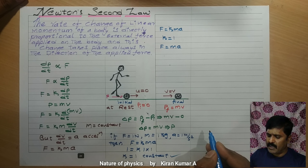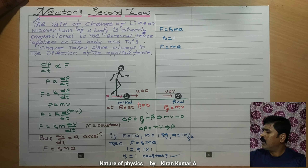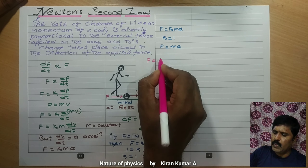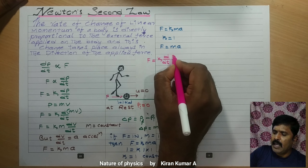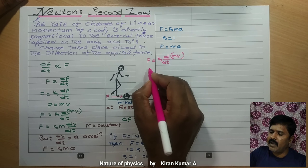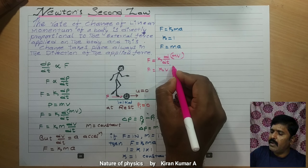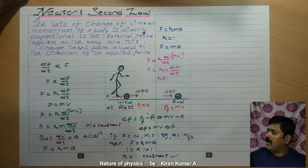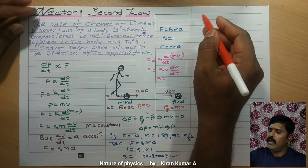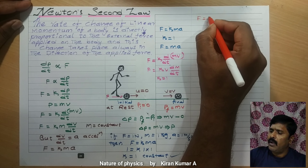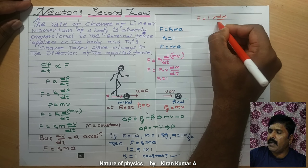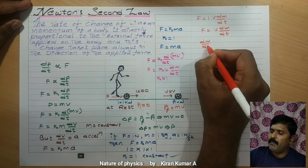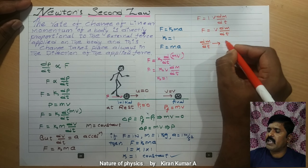Sometimes mass is variable and velocity remains constant. In that case, F is equal to k times v times dm/dt, where k is equal to 1. So F is equal to v times dm/dt, where dm/dt gives the change in mass with respect to time.